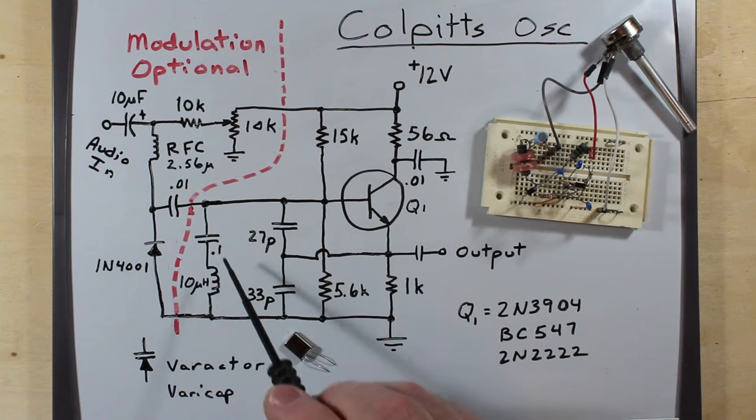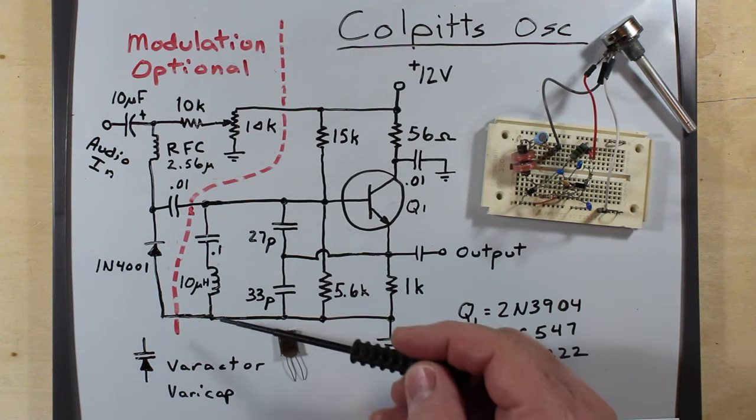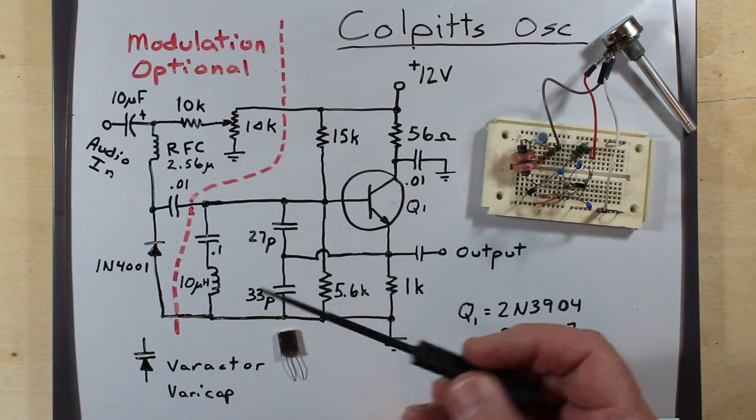The inductor here in the capacitor could be replaced by a crystal. This is a 17.4 megahertz crystal. And this is what I very first started out with in this circuit. And with this here, we saw 9 point some megahertz.